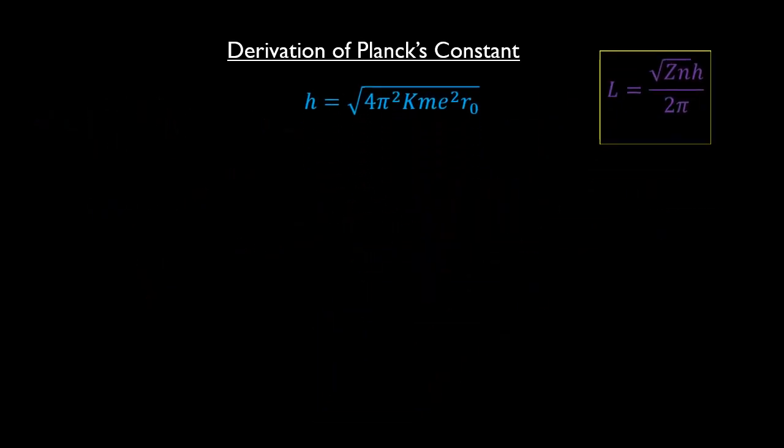h is a function of four primary physical constants which are the electrostatic constant k, the mass of an electron little m, the electronic charge little e, and the Bohr radius r0.